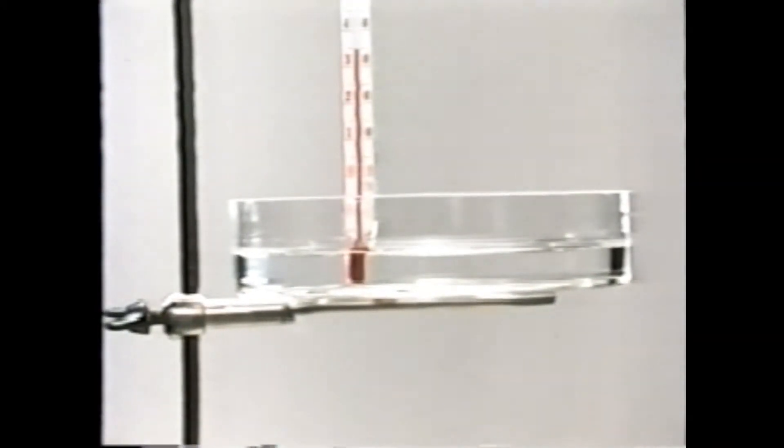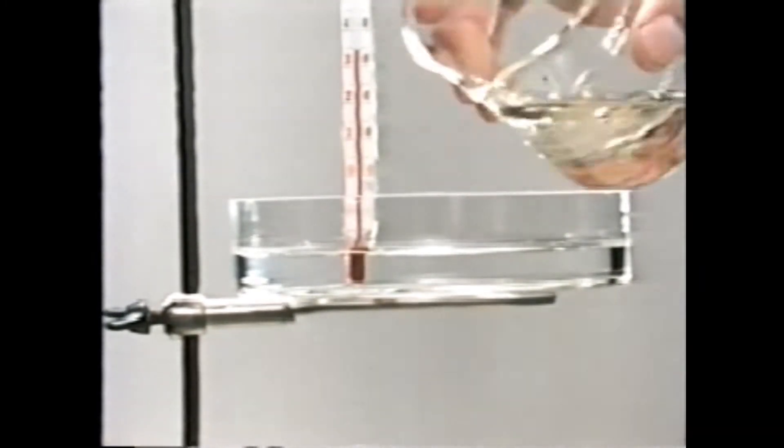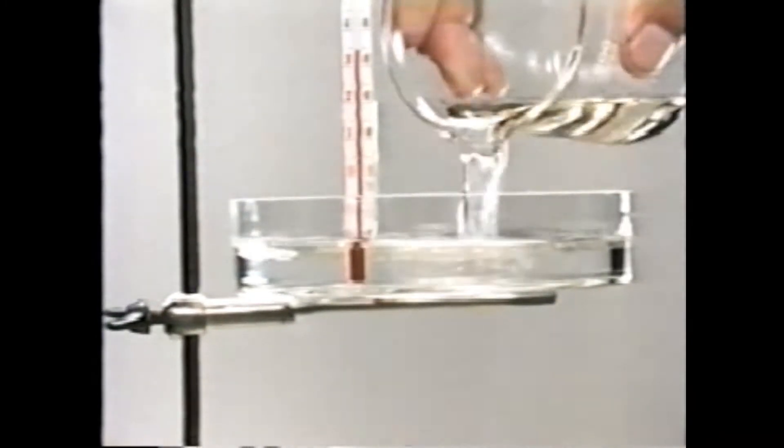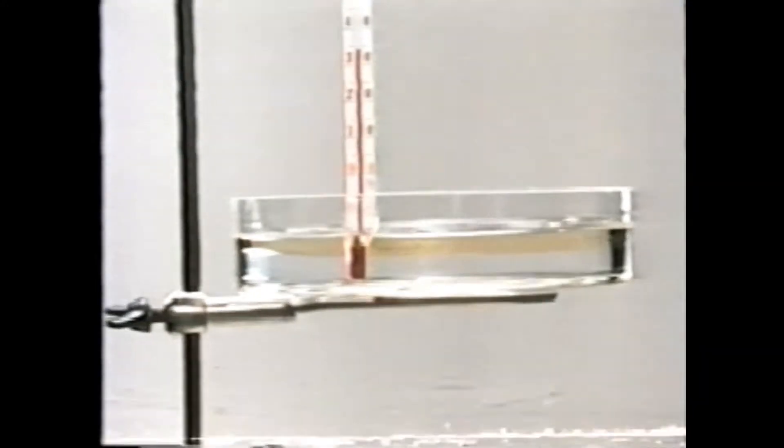Now let's see what will happen using some ethyl which evaporates quickly. We poured some colored ethyl into the water in a petri dish. The evaporating ethyl lowers the water temperature.